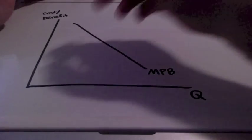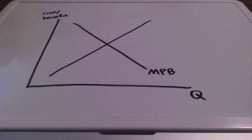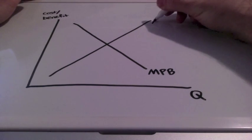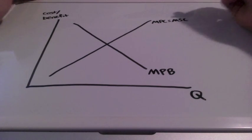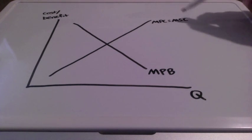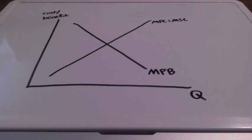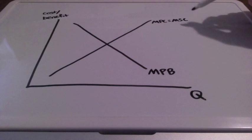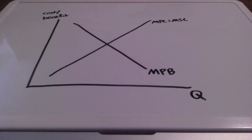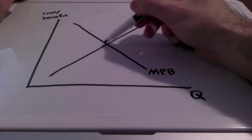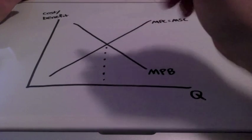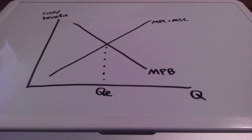We also have a supply curve when we're talking about externalities. Specifically for positive externalities, the marginal private cost is going to equal the marginal social cost. The marginal social cost is equal to the private marginal cost plus any additional costs it creates — in other words, the total cost to society as a whole for producing one further unit or taking one further action in an economy. This intersection, where marginal private cost meets marginal private benefit, represents the equilibrium quantity.